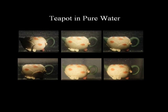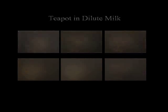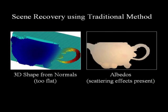The second technique we consider is the popular photometric stereo method. Traditional photometric stereo computes the surface normals and albedos of a Lambertian object using 3 light sources. We have shown that in the presence of scattering, at least 5 sources are needed to compute normals and albedos. Here we show images of a teapot seen through pure water under different lighting directions, shown for illustration purposes only. Now we show the same teapot seen through dilute milk — notice the strong effects of scattering leading to significant change in appearance. If we apply the traditional photometric stereo to these images, the 3D shape obtained is very flat and the scattering effects are absorbed by the computed albedos.